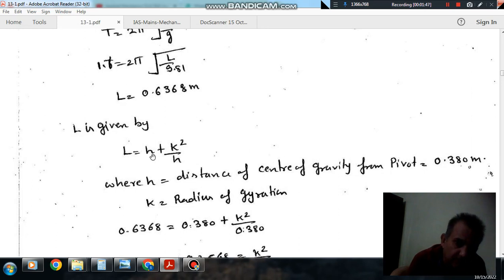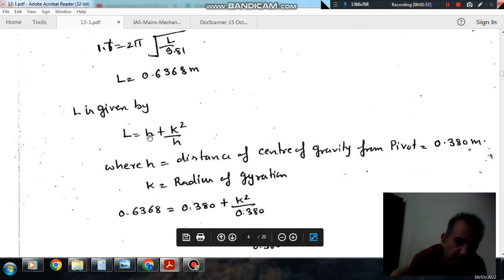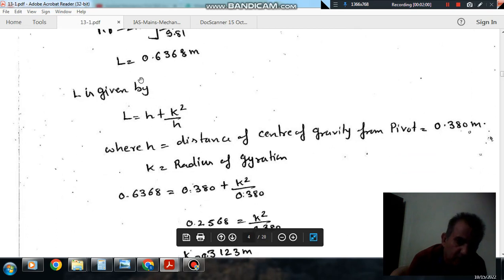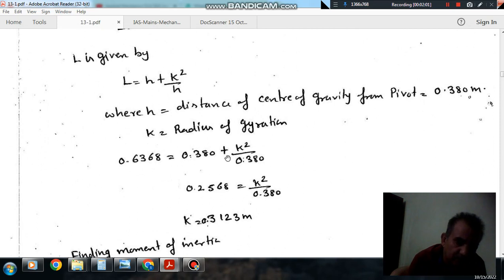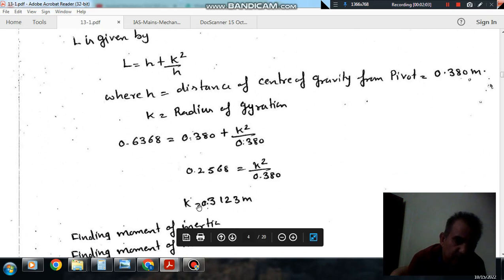And now, this length can be expressed as h plus k squared by h, where k is radius of gyration and h is this distance, the distance of center of gravity from the pivot which is 0.380 meters. So, the distance h comes out as 0.380 meters.